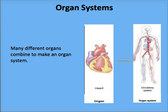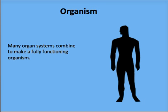Many organs combine to make an organ system. The heart and its associated veins and arteries make up the circulatory system. Many organ systems then combine to make a fully functioning organism. Organ systems include the cardiovascular system, nervous system, digestive system, integumentary system, and endocrine system.